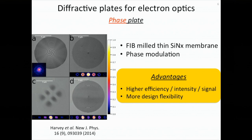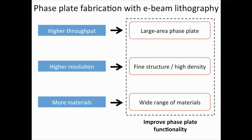As we can see from the figures, it can be used to generate vortex beams as shown in figure B, and also generate high-order Laguerre-Gaussian beams as shown in figure C. All the previous diffractive plates are made by focused ion beam. We propose here that we can use electron beam lithography to make the phase plates, because electron beam lithography has higher throughput, which enables us to pattern a large area of phase plates. Electron beam lithography also has higher resolution than focused ion beam, and can be applied to a wider range of materials. So all the properties of electron beam lithography actually help to improve the functionality of the phase plate.